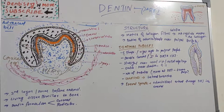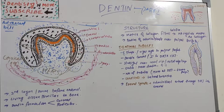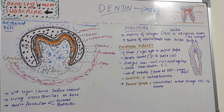Dentine is basically the second layer of the tooth, which provides the bulk and general form of the tooth. It begins to form slightly before the enamel and it determines the shape of the crown, including the cusps and ridges, and also the number and size of the roots.